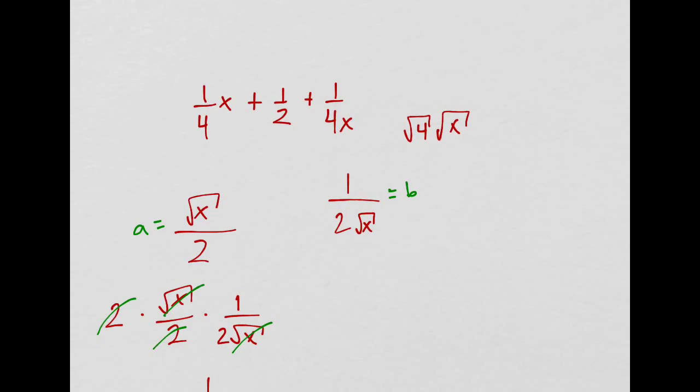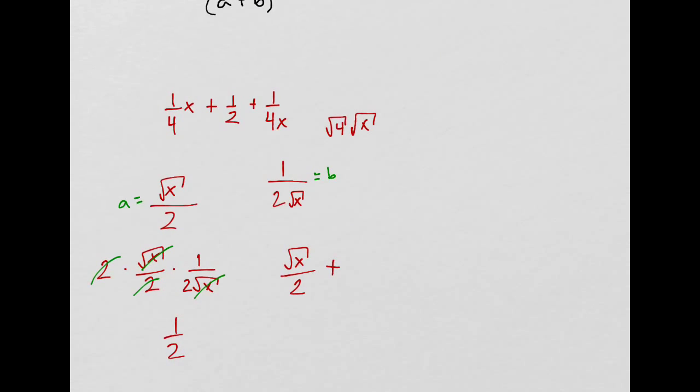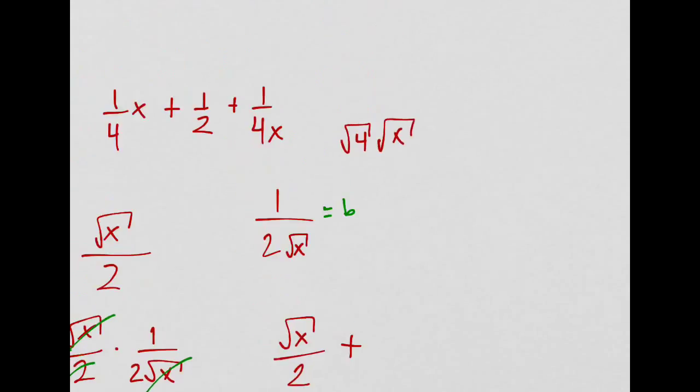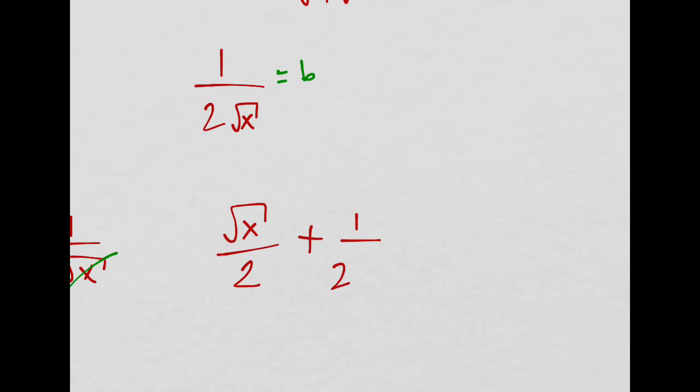So immediately we can just write a, which is square root of x divided by 2, plus b, which was 1 over 2 square root of x, and then say quantity squared.